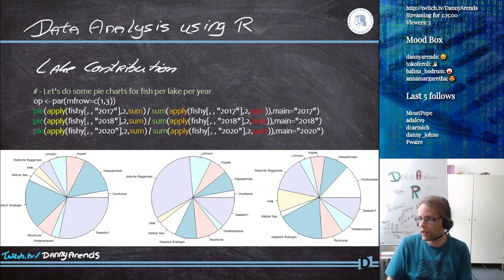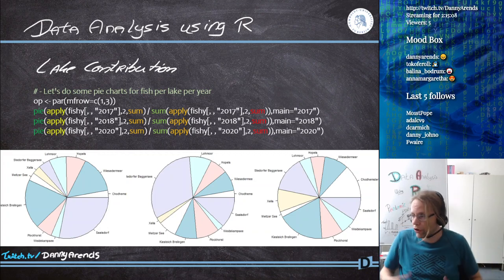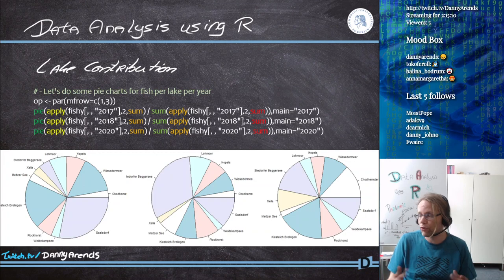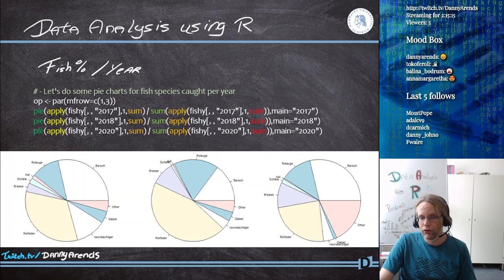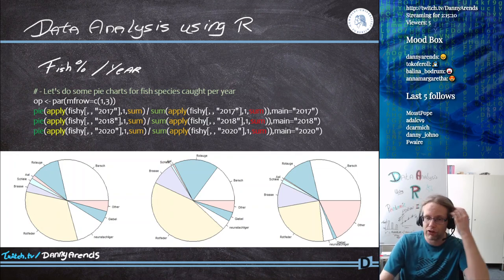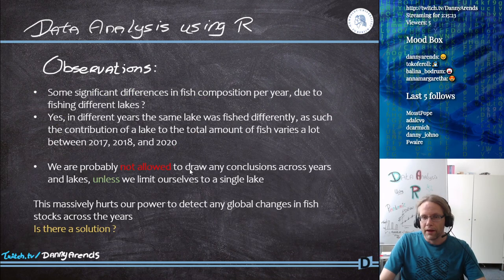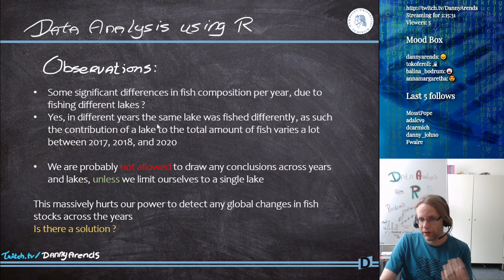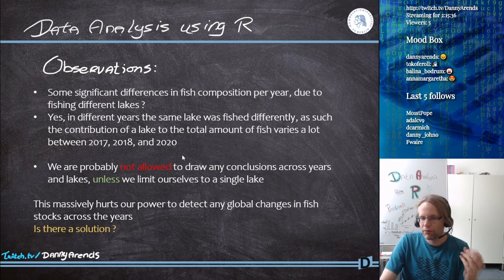These differences come from the fact that different lakes have been fished very differently, so the contribution of each lake to the total amount of fish caught varies greatly. This also causes different species to have very different influence on the total catch. The observations show significant differences in fish composition per year.